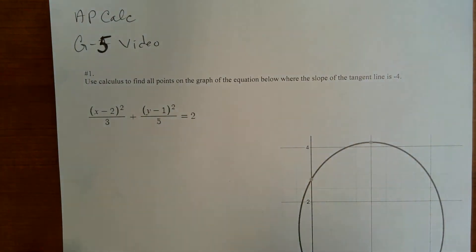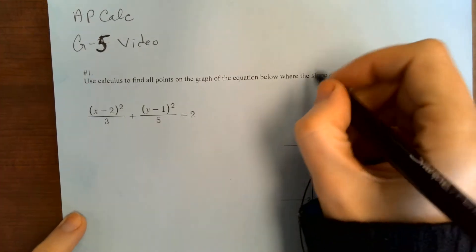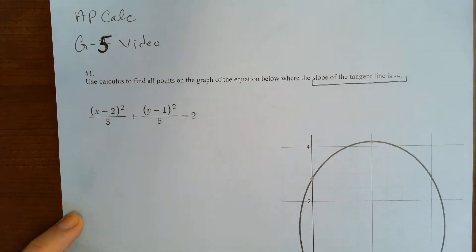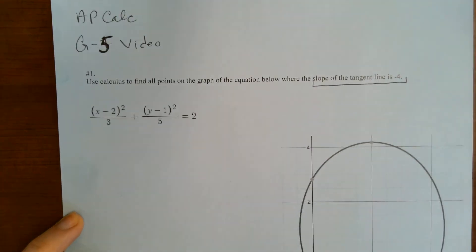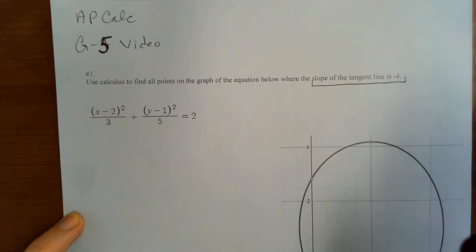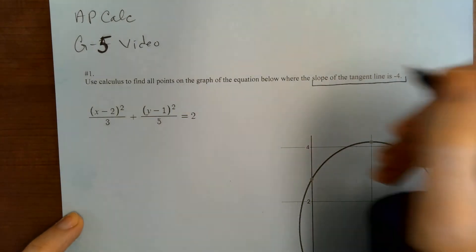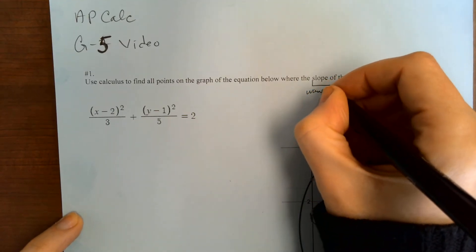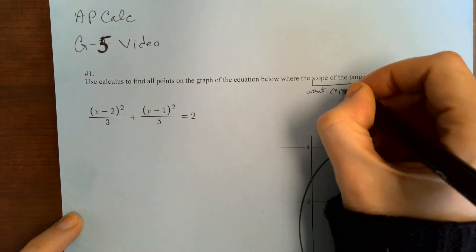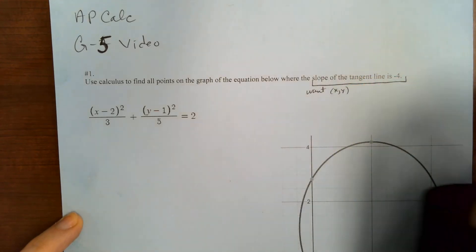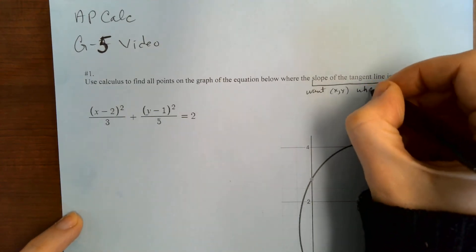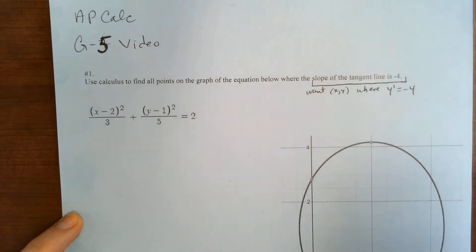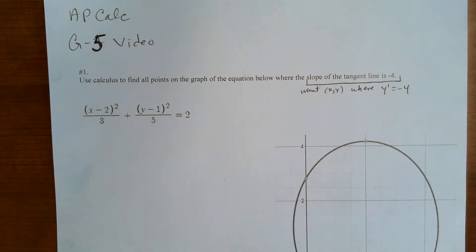So slope of the tangent line — we want the points where the slope of the tangent line is negative four. This means that we want the points — we want the x and y coordinates — where y prime is negative four.